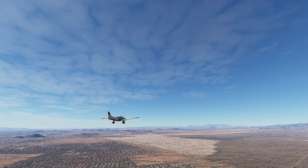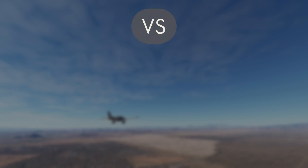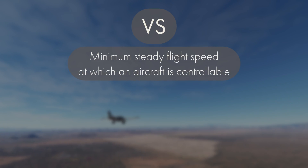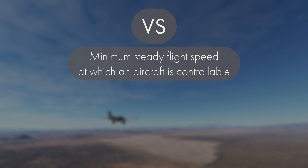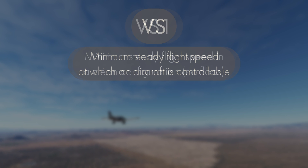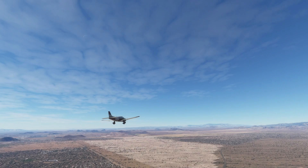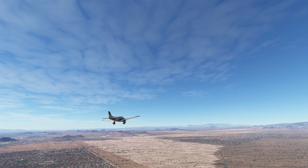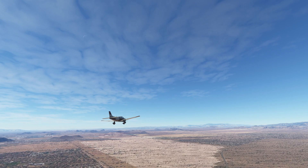The next one is VS, which is the minimum steady flight speed at which an airplane is controllable. This is generic and not tied to a specific configuration, but if you want to get specific, let's look at VS-1. This is essentially the minimum steady flight speed when the airplane is in a clean configuration, meaning no flaps. In the case of the PA-28, this is 50 knots.